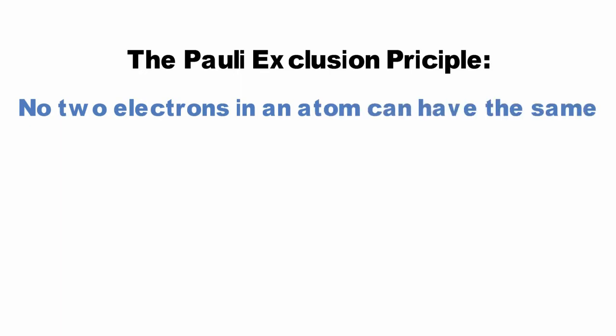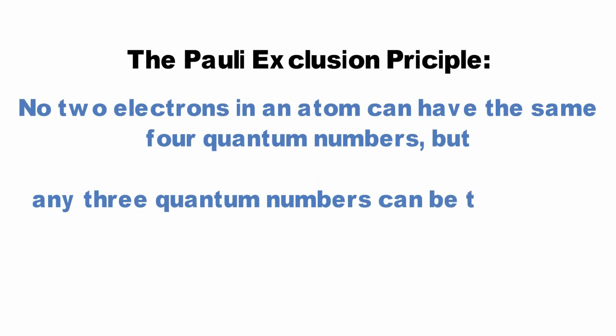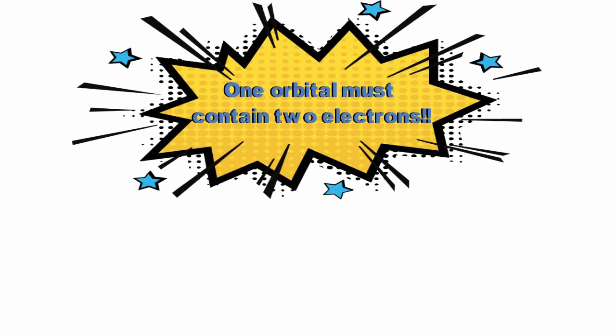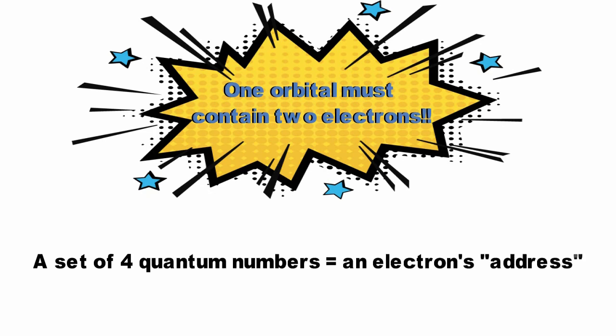The spin quantum number leads to the Pauli exclusion principle, which states that no two electrons in an atom can have the same four quantum numbers, but any three quantum numbers can be the same. This means one orbital must contain two electrons. A simple way of looking at quantum numbers is to think of them as an electron's address. The four numbers, unique to each electron, tell you where that electron can be found in an atom.